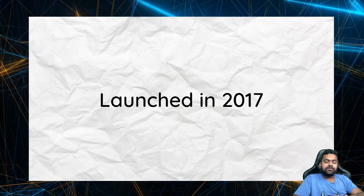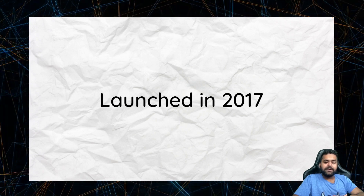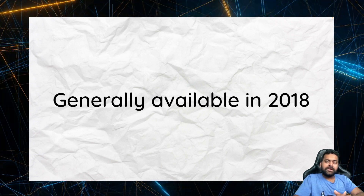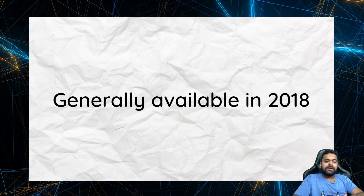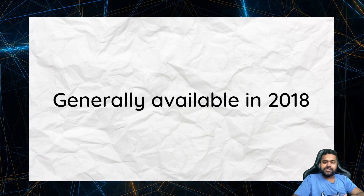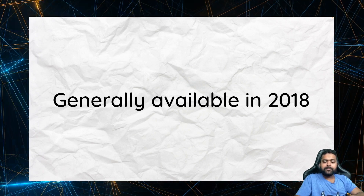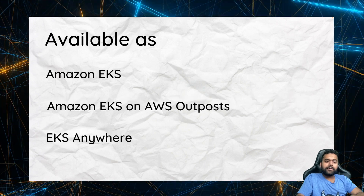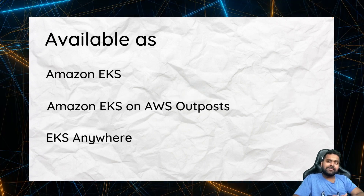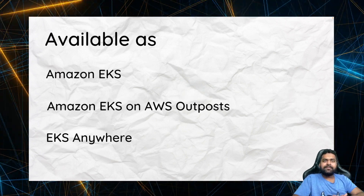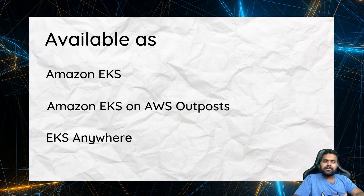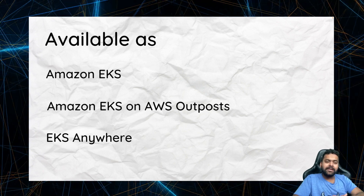AWS launched the EKS service in 2017, but when it launched it was not available for everyone. Later on, in June 2018, Amazon EKS became generally available. Amazon EKS is available as three different products — or projects, I would say.